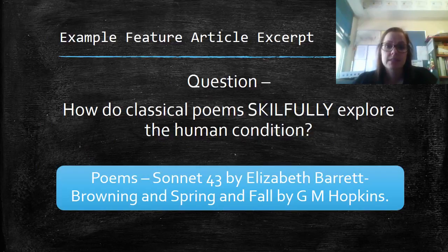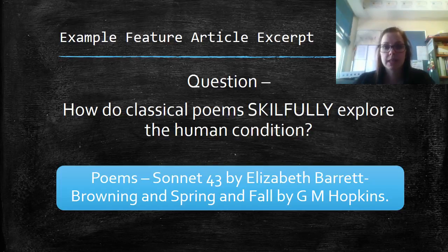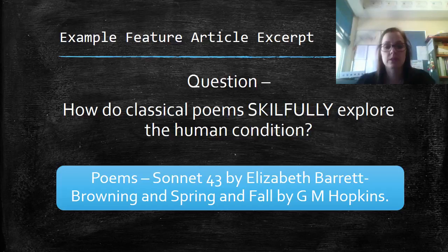For the purpose of the example and all practice exams, we're going to go with the question, how do classical poems skillfully explore the human condition? For the exemplar, we're having a look at the poem Sonnet 43 by Elizabeth Barrett Browning and Spring and Fall by GM Hopkins.